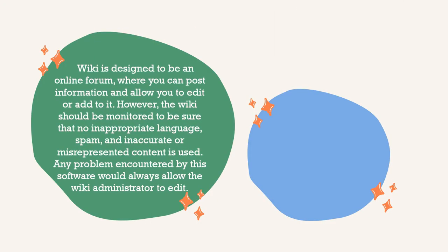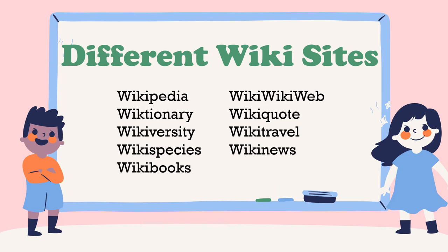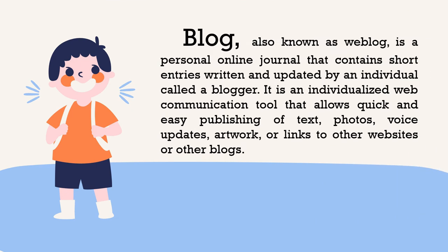Wiki is designed to be an online forum where you can post information and allow you to edit or add it. However, the wiki should be monitored to be sure that no inappropriate language, spam, and inaccurate or misrepresented content is used. Any problem encountered by this software would always allow the wiki administrator to edit. These are the different types of wiki websites: Wikipedia, Wiki, Wiktionary, Wikiversity, Wikispecies.